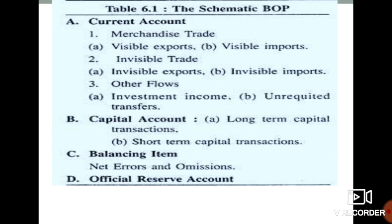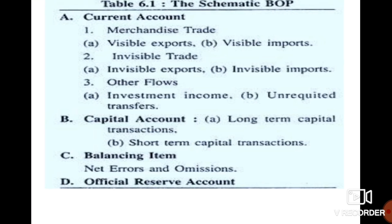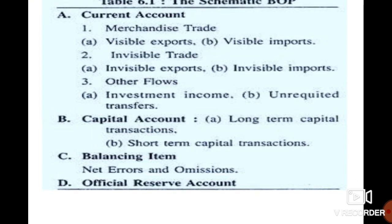Within the current account, visible exports and imports are called net exports. The other flows — such as income from abroad — are called net factor payments. Net factor payment is part of the current account, and visible trade is related to the net export account.